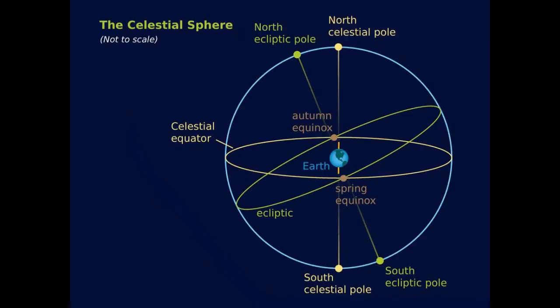The ecliptic. So now you know the north and south celestial poles and the celestial equator. There's one more imaginary circle on the celestial sphere you need to know about.